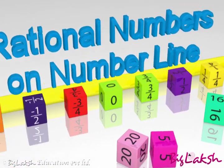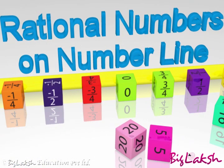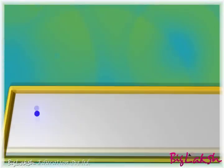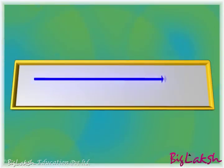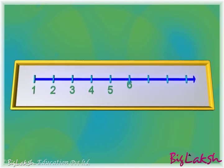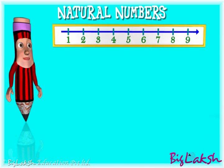Rational numbers on number line. Let us start this chapter by revising different types of numbers which can be represented on the number line. Let us first discuss about natural numbers.